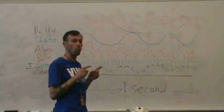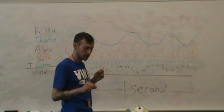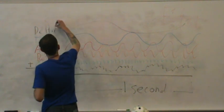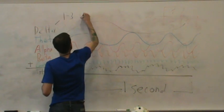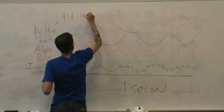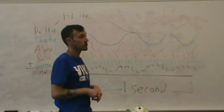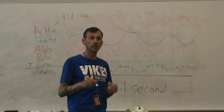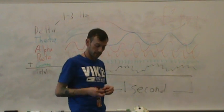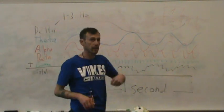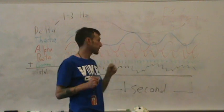Delta is going to be from one to three hertz per second. Hertz can be abbreviated HZ. Hertz like the rental car company. And that's just a measure of how many times something moves per second. So, delta is going to be one to three cycles per second, one to three rhythmic firings per second.